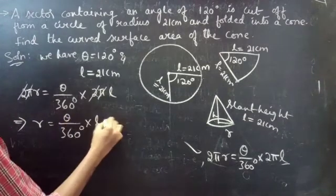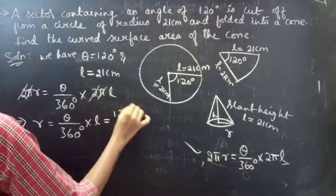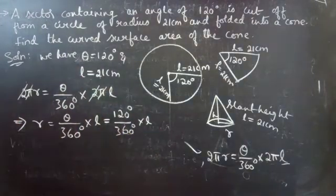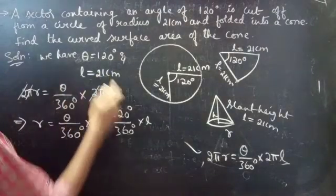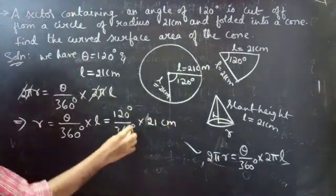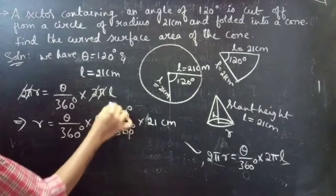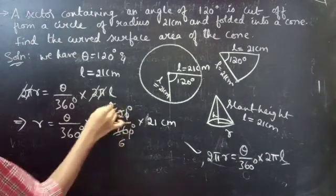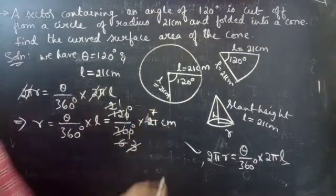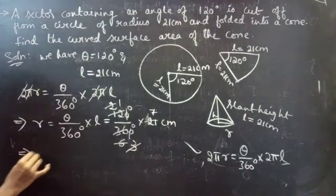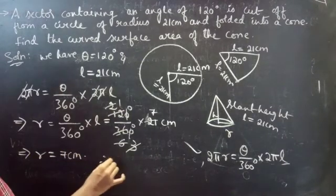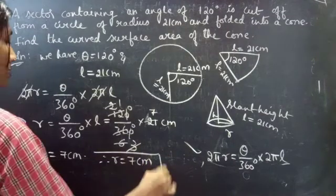Now we can substitute theta equals 120 degrees and L equals 21 centimeters. So R equals 120 over 360 into 21. The zeros cancel, giving R equals one-third into 21, which equals 7 centimeters. Therefore, R equals 7 centimeters.